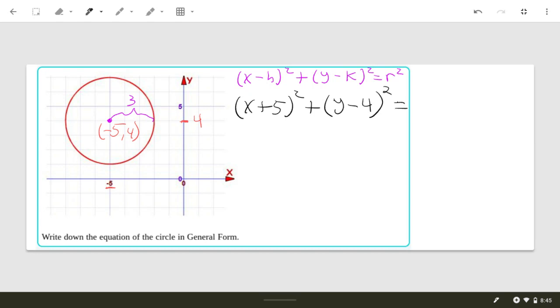And then r squared. Well, the radius is r, so that's 3 squared. Okay, and then we're going to multiply this out and get it in general form.